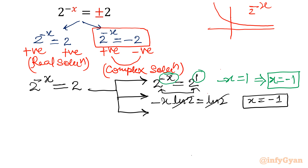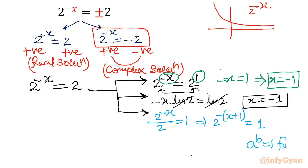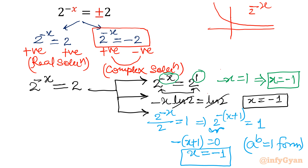The third method: bring the 2 to the left side to write 2 raised to the power minus x over 2 equal to 1, which becomes 2 raised to the power minus x plus 1 equal to 1. Recalling the form a raised to the power b equal to 1: base equal to minus 1 is rejected since base is already 2. The accepted case is where the exponent is 0, so minus x plus 1 equal to 0, giving x equal to negative 1 from the a^b = 1 form. Real solution done: x equal to negative 1.